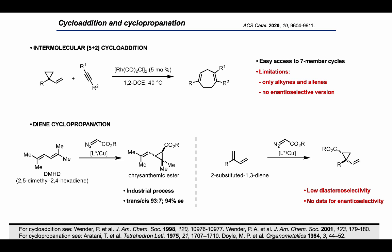The extension of such procedure to 1,3-conjugated dienes leads to the formation of VCPs. It has been implemented on an industrial scale for the conversion of dimethyl hexadiene to chrysanthemic esters, which constitute the core of the pyrethroid class of insecticides. However, this success has somewhat overshadowed the difficulties encountered in the cyclopropanation of different types of dienes. 2-substituted 1,3-dienes, for instance, have found very scarce application in this chemistry, and the only systematic study in this regard, by Doyle, reports very low diastereoselectivities and no information at all about enantioselectivity.